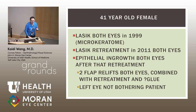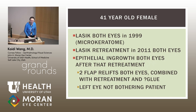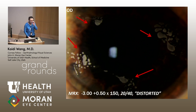This was a 41-year-old female who had LASIK in both eyes in 1999 with a microkeratome, and then had LASIK retreatment in 2011 in both eyes, with epithelial ingrowth in both eyes after that retreatment. She had already gotten two flap relifts in both eyes combined with retreatment and some type of glue per her history. Her left eye was not bothering her and corrected to 20/20, but the right eye was really the most bothersome — she only corrected to about 20/40, described her vision as very distorted, and as you can see here there are four very prominent areas of epithelial ingrowth underneath her flap.